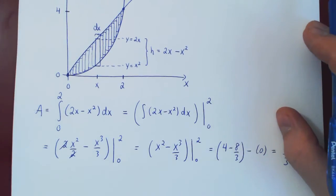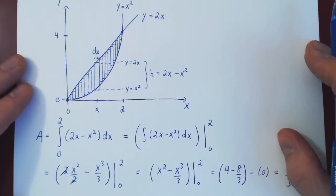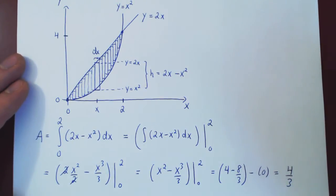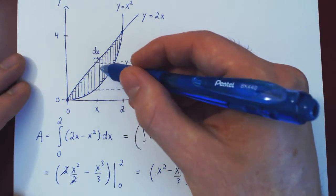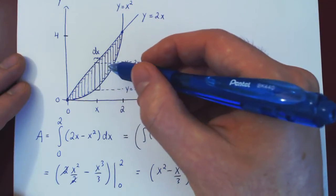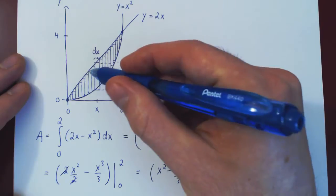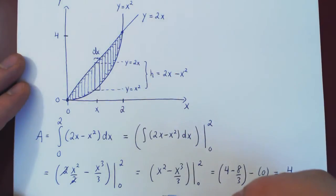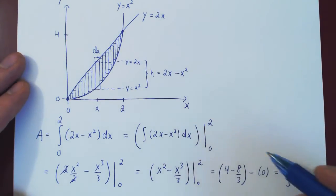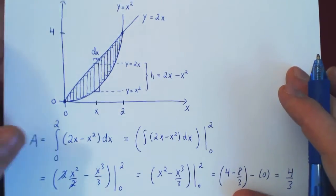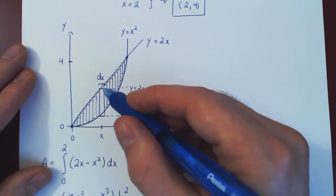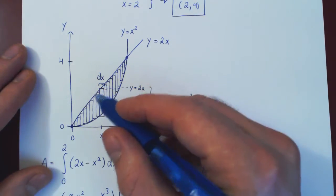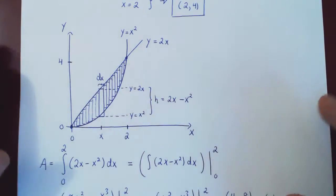The area of the region bounded by y equals 2x and y equals x squared is 4/3. Now let's look at the solution if we had used horizontal rectangles instead of vertical ones. We know we should get 4/3 again, since we're finding the area of the same region in two different ways.